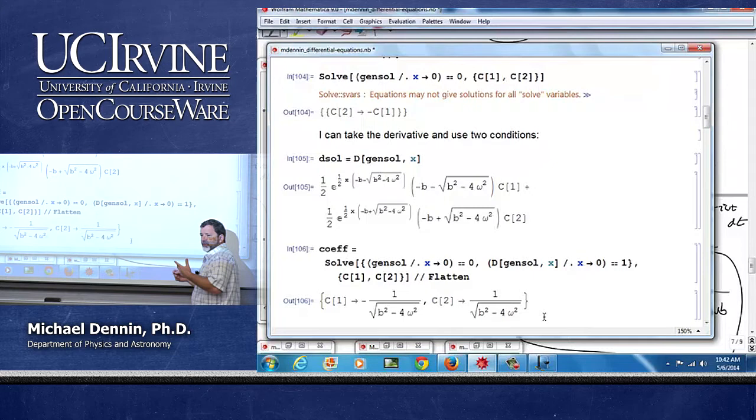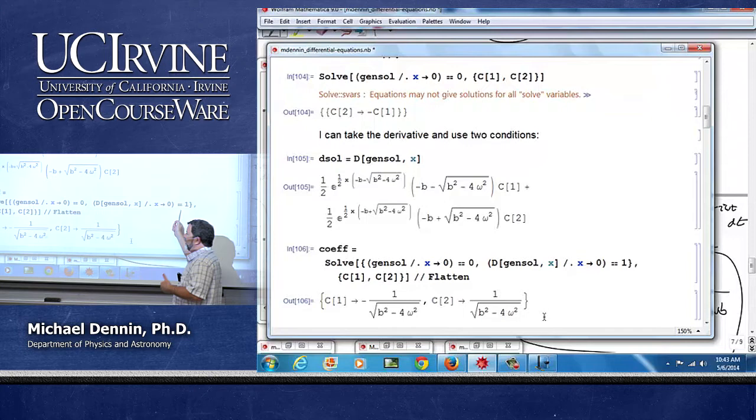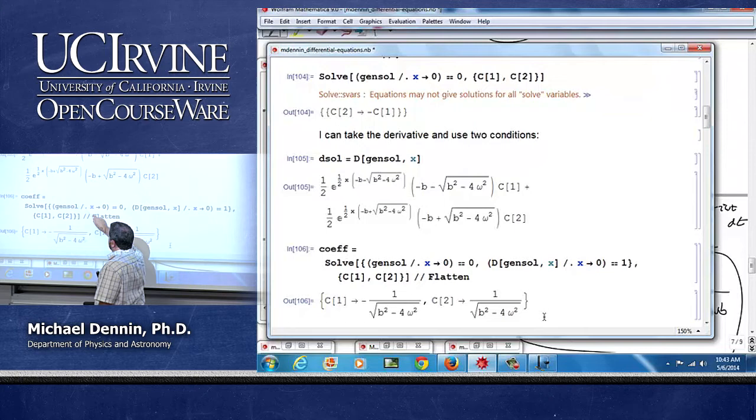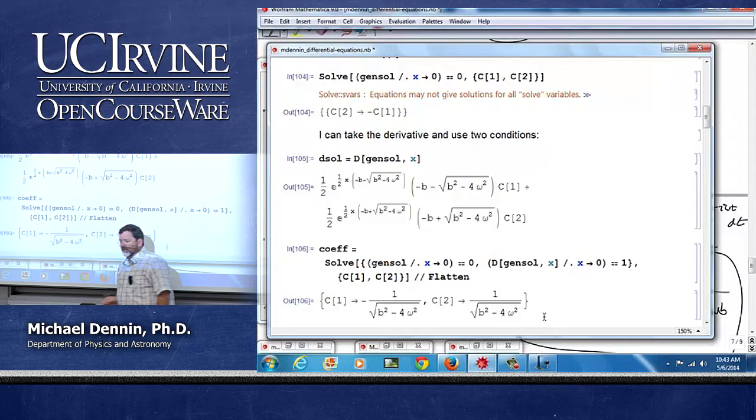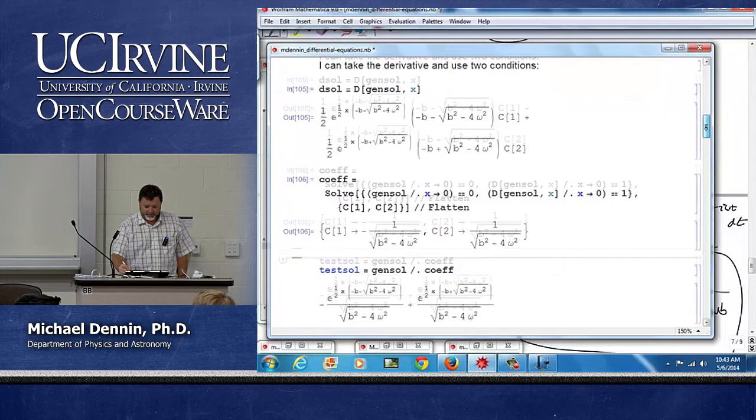By solving the solution at x equals zero is zero, and the derivative of the solution at x equals zero is one. Now, I could pick zero here, but if the derivative, think of an oscillator. If the velocity and position are both zero, does it move anywhere? No, so that wouldn't be a very interesting one. Notice the syntax, right? I've got my solution. I'm letting x go to zero, and then I'm setting that whole thing equal to zero. And notice it gets me coefficients in terms of b and omega. It's perfectly happy to do that. It doesn't complain. Those are perfectly fine things to solve in terms of.